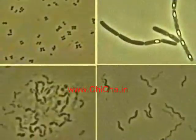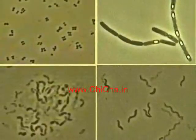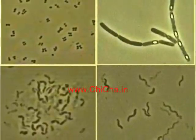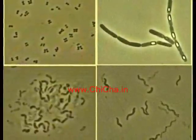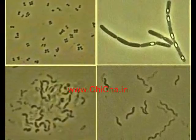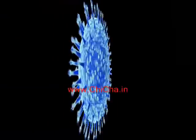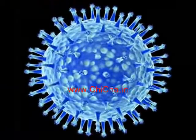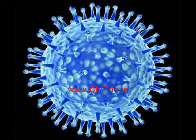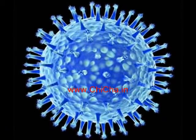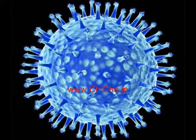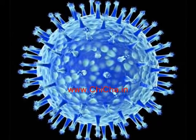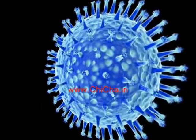Coming to the smallest size of bacteria, it would be about 1/14,000th of the red blood cells in our blood.